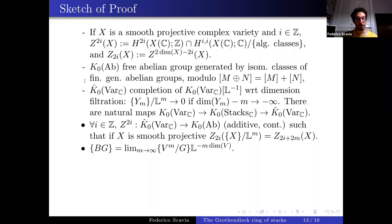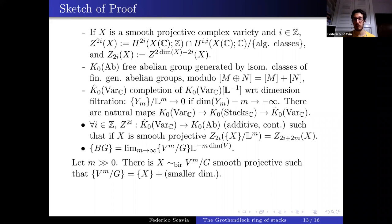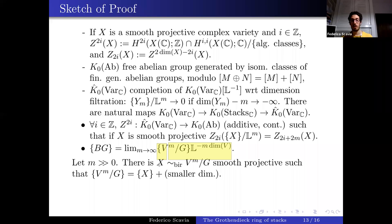Since we have this description of BG as a limit and Z_{2i} is continuous, for m large enough the class of BG and the right-hand side have the same Z_{2i}. So for m large enough we can find X birationally equivalent to V^m/G (smooth projective, using compactifications and resolution of singularities) such that the class of V^m/G equals the class of X plus terms of smaller dimension.